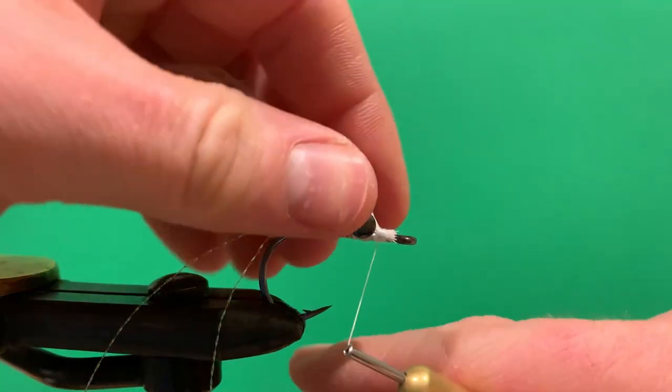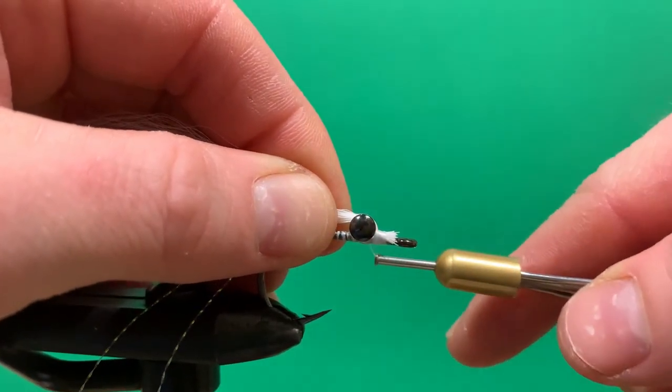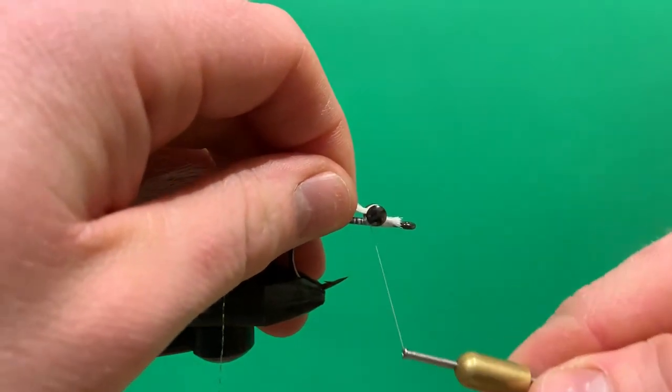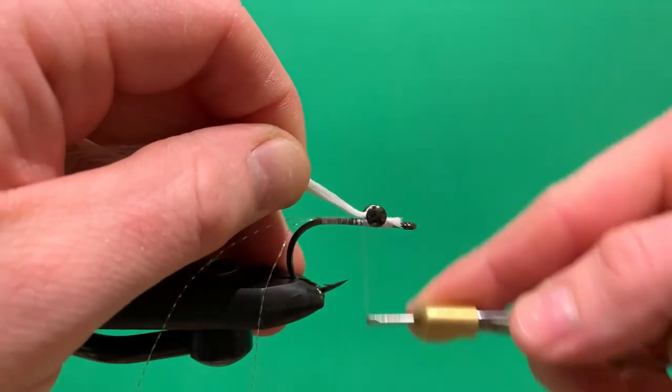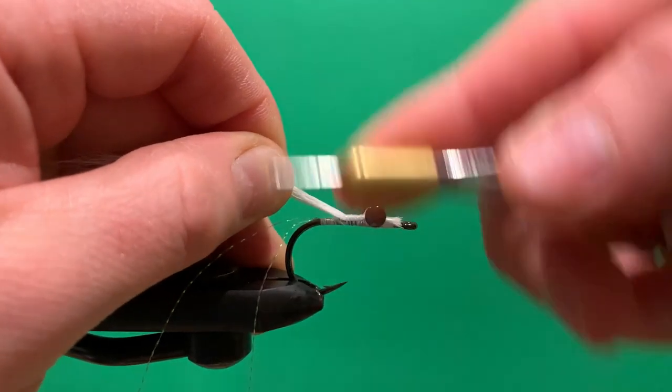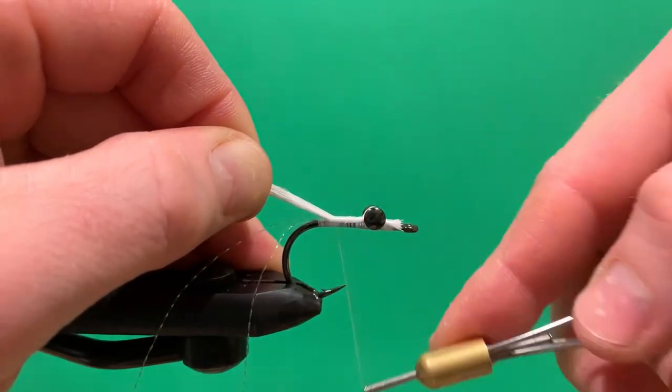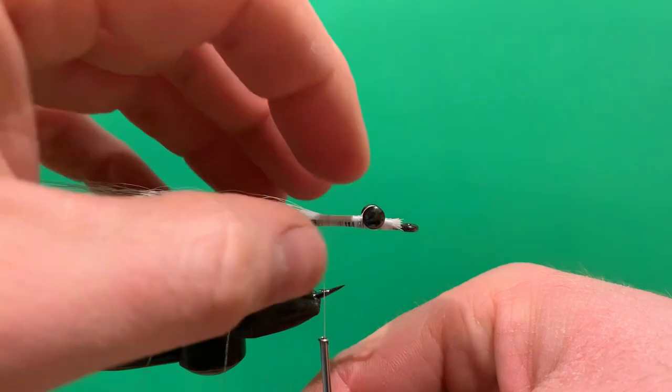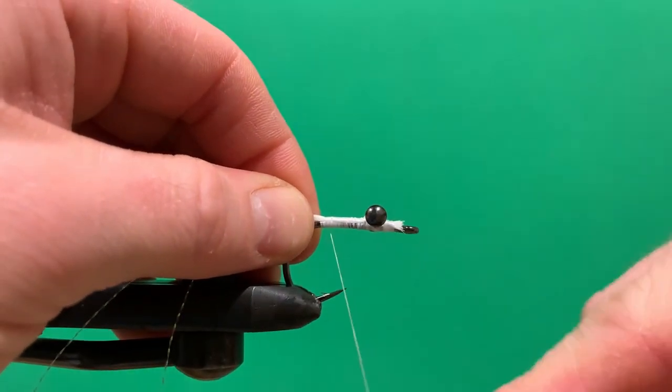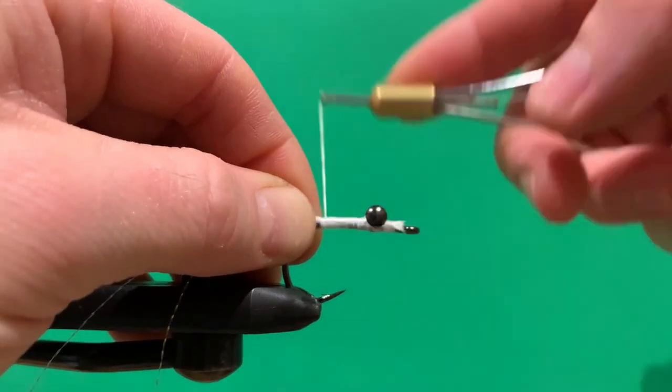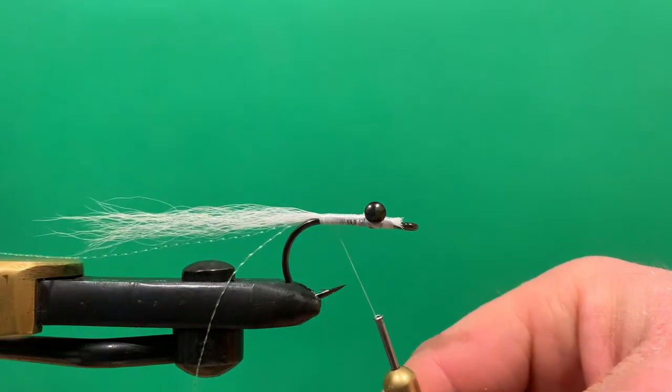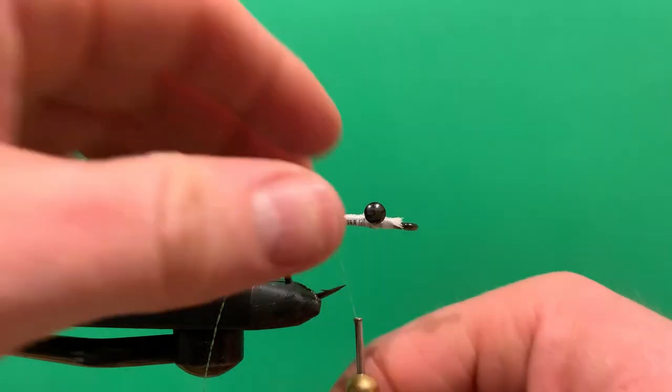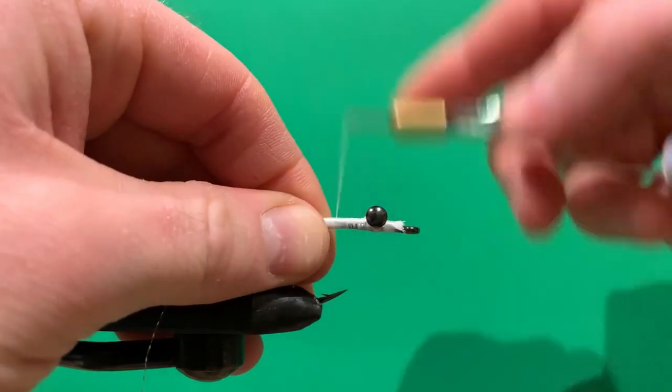Once that's done, wrap your thread right back up against the eyes, run it underneath, and cinch down to lock these fibers in place right behind the eye. Keeping pressure and pulling the fibers up, start to work your thread all the way back to the point of the hook. As you get two or three wraps from the back, leave off the pressure and loosen your turns a little bit. If you pull too tight, you'll flare the bucktail and get a splay. I want to keep it nice and low profile. Then just get touching turns running all the way back up.